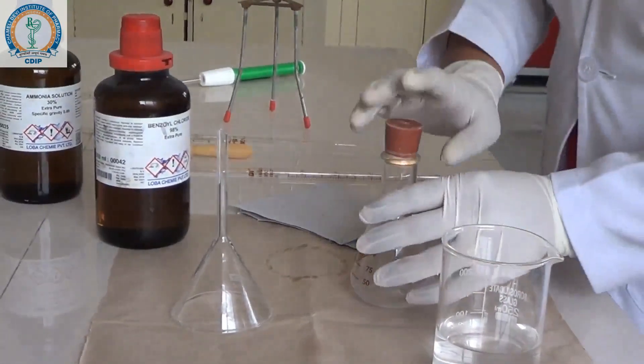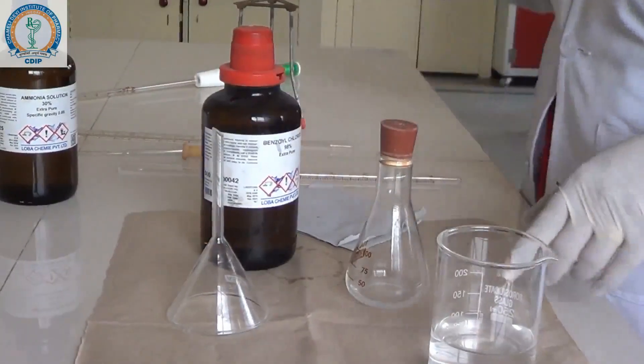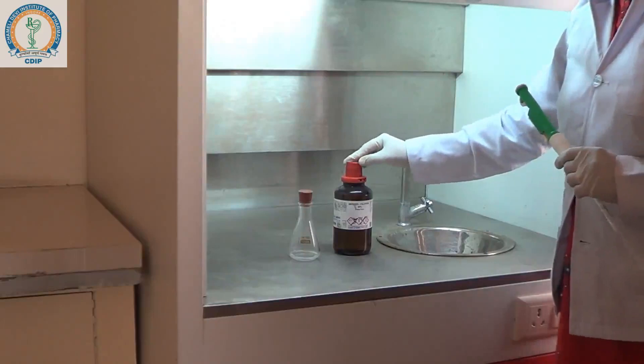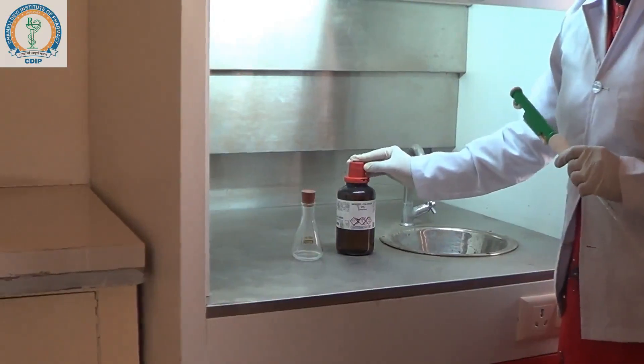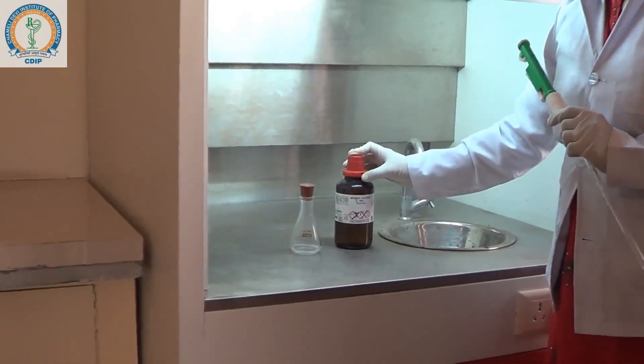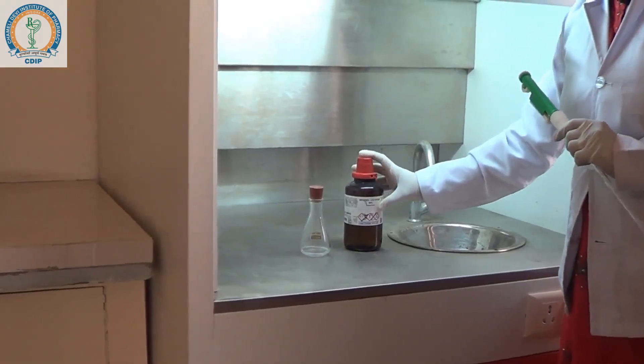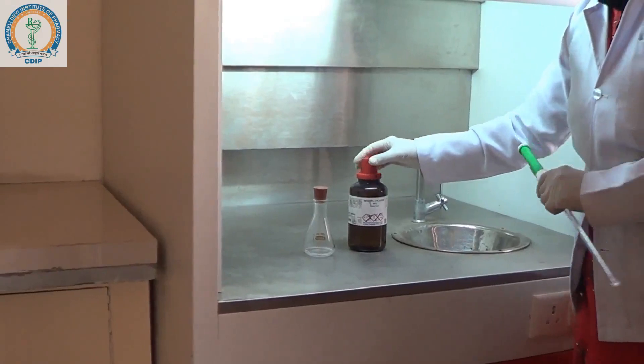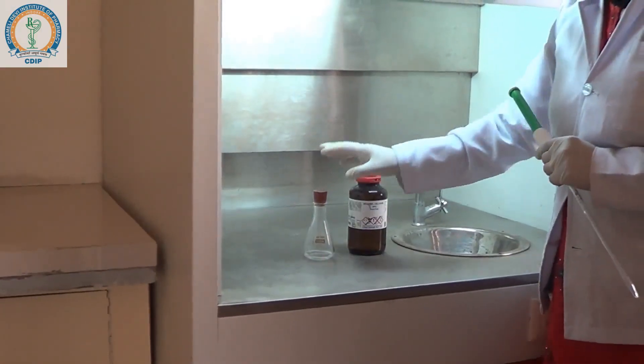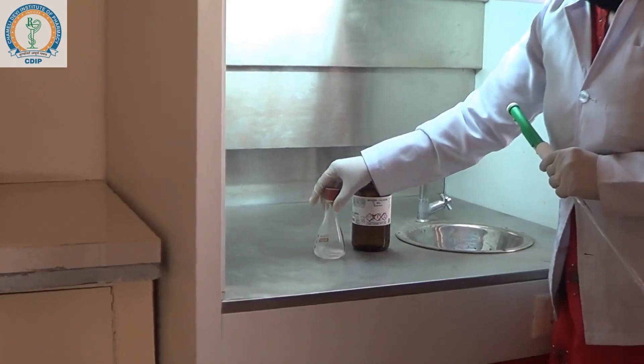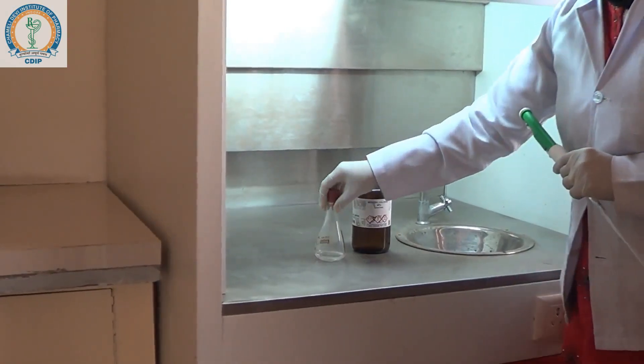In this solution we will add benzoyl fluoride, but we will transfer that into the fume hood. Now we are taking this benzoyl fluoride since it is fuming in nature and irritating to your eyes also. We are taking this inside the fume hood and transferring 2 ml of this into our solution of ammonia and water, which is 5 ml ammonia and 5 ml water.